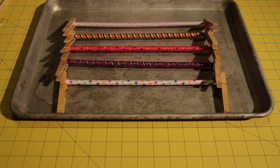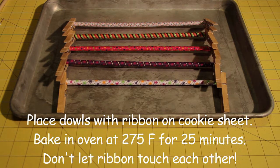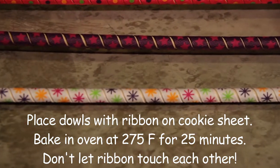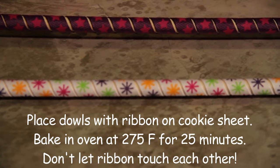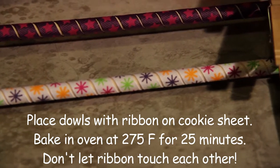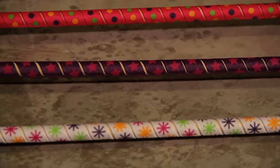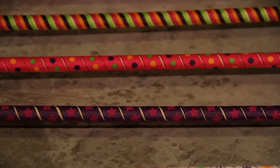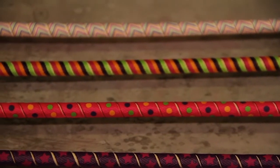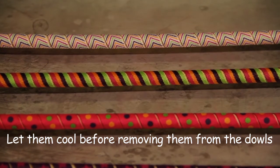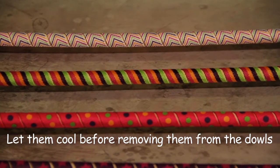So these are the five different colors of ribbon that I just pulled out of the oven. Again I baked them at 275 degrees for 25 minutes. When I put them on the cookie sheet I made sure that none of the ribbon was touching each other so that they would not melt to each other. You want to make sure that they cool completely before you take them off the dowels. That way they will hold their curl longer and better.